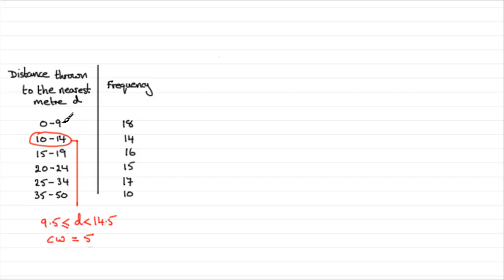So what's the class width for this one here that says 0 to 9? Well, you've got to be very careful with this one because you can't throw anything less than 0 meters. Unless you threw it behind you, I suppose, but let's excuse that. What we've got here is that d must be greater than or equal to 0. But then from 9 to 10, being to the nearest meter, you've got to be less than 9.5 meters. So the class width for something like this will be 9.5 units.